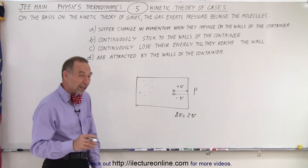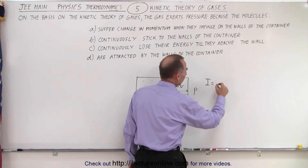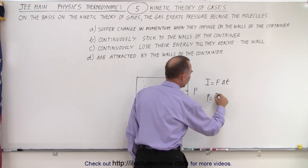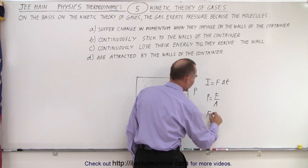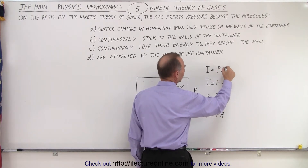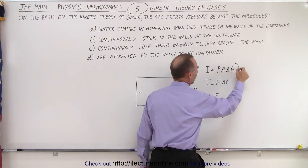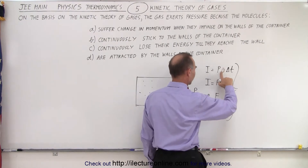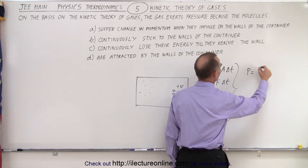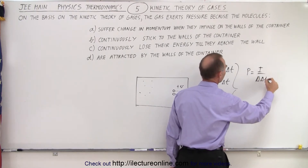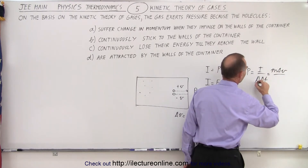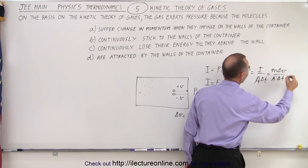We can also think about impulse. We know that impulse is equal to force times delta t. We know that pressure is equal to force divided by area, so that force equals pressure times area, so that impulse equals pressure times area times delta t. Rearranging, pressure equals impulse divided by area divided by delta t, and the impulse equals m times the change in velocity, divided by area times delta t.